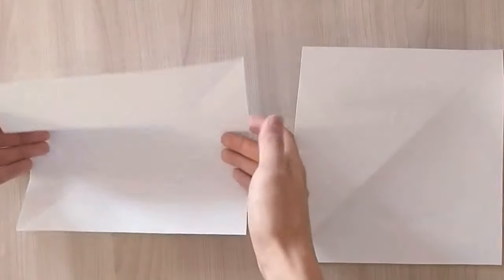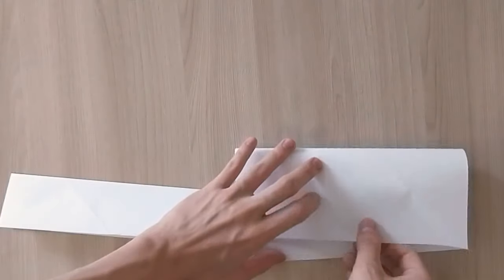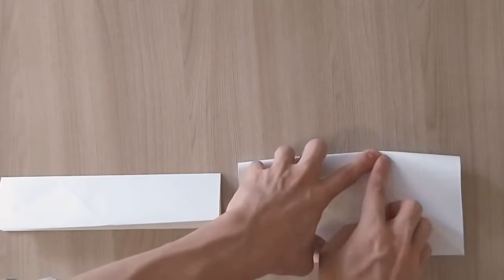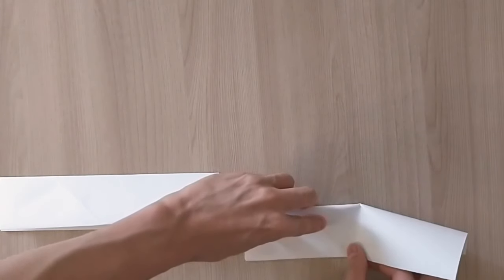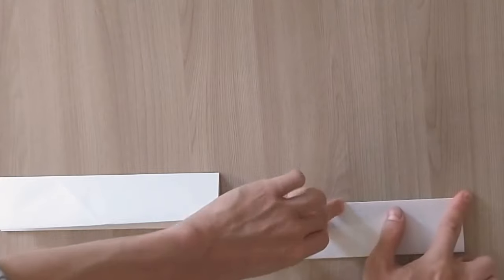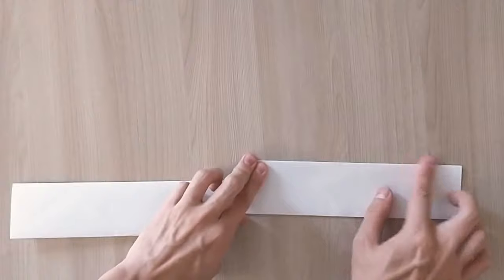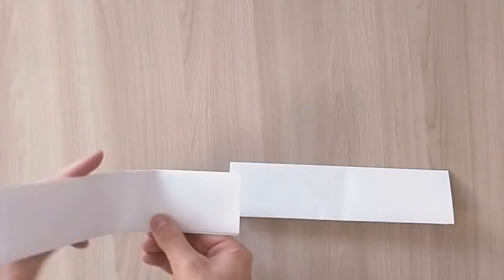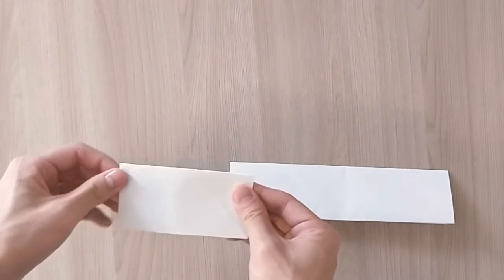So you start off by folding both of the sheets in half two times. Do the same here, and then you're going to fold them in half but this time vertically. And then unfold.